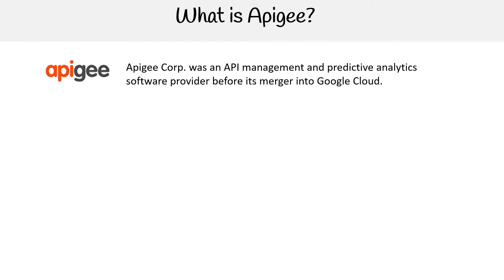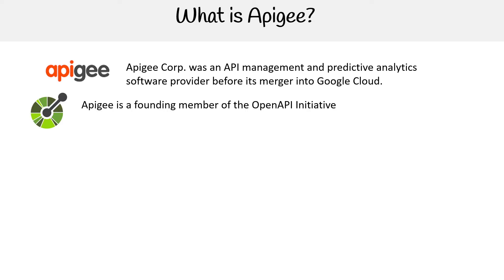Hey, this is Andrew Brown from ExamPro, and we're looking at what is Apigee. Apigee Corporation was an API management and predictive analytics software provider before its merger into Google Cloud. Apigee is a founding member of the Open API Initiative.